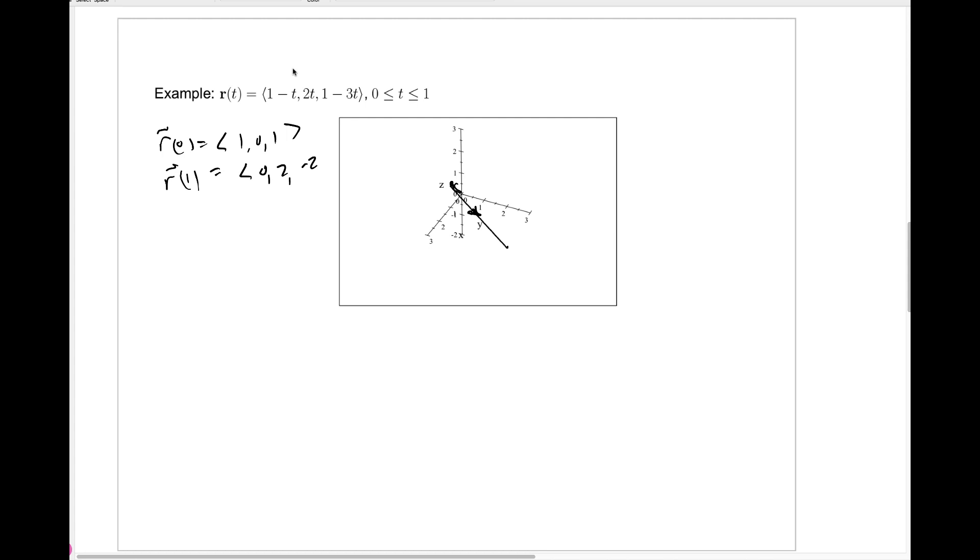And it shouldn't be a surprise that it's a straight line segment, since this is equivalent to writing x equals 1 minus t, y equals 2t, and z equals 1 minus 3t. And these are exactly parametric equations for a line, as we saw at the end of the last chapter.